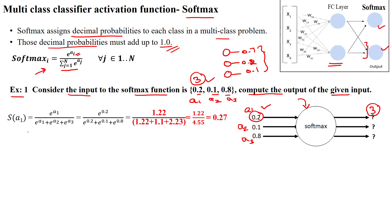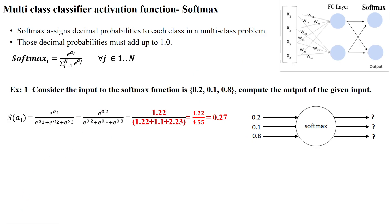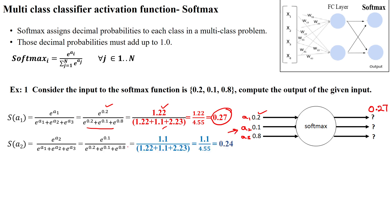To calculate the output for a1, we compute e to the power a1 divided by e to the power a1 plus e to the power a2 plus e to the power a3. Substituting the values — a1 is 0.2, a2 is 0.1, a3 is 0.8 — we get the output for the first class as 0.27.